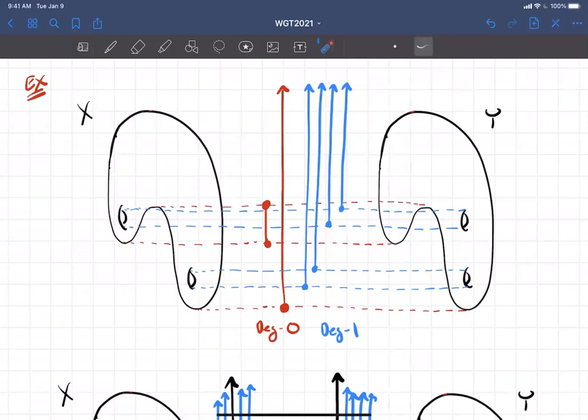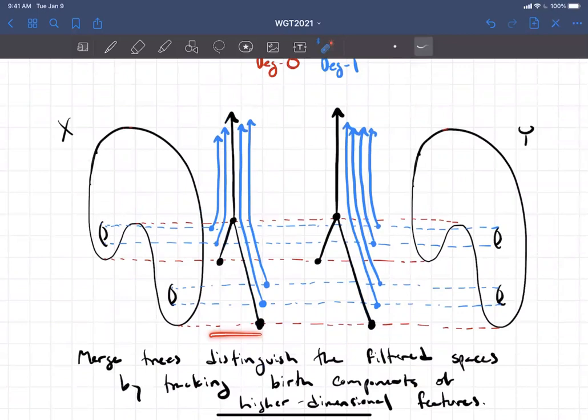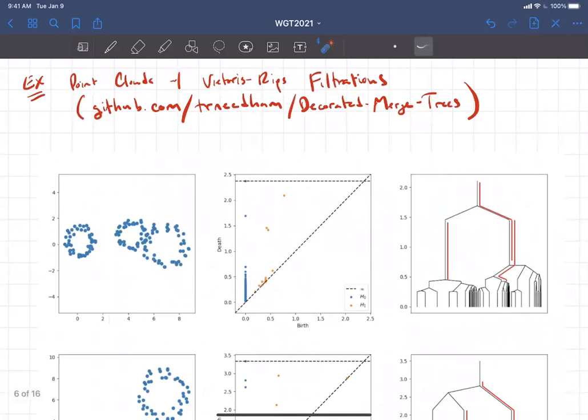Let's go back to our motivating example. We have two spaces with their height functions. They have the same barcodes in degree zero and degree one, but if I construct their decorated merge trees, then I see that the decorated merge trees distinguish these examples. Because the decorated merge tree is not just recording the connected component and degree one homology information separately, it's recording where the degree one homology lives, specifically in this example where it's born. So this is a richer invariant than collections of barcodes because it's involving the relationships between degrees.